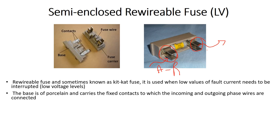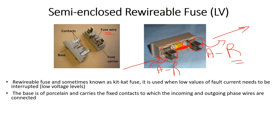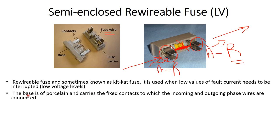For example, this is phase R — the first phase — and this one is the outgoing phase R going to the load. The connection between incoming and outgoing runs through a small wire called the fuse wire. When a short circuit occurs, this wire melts and the circuit is cut off.